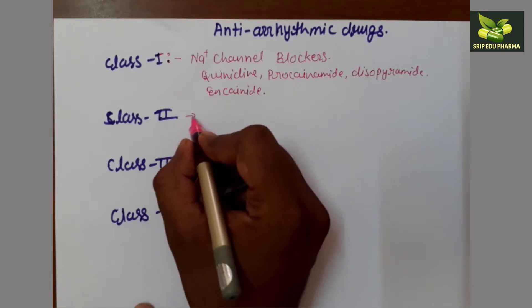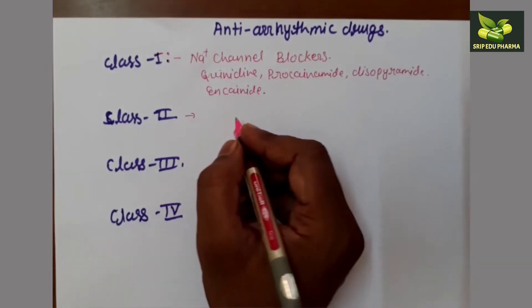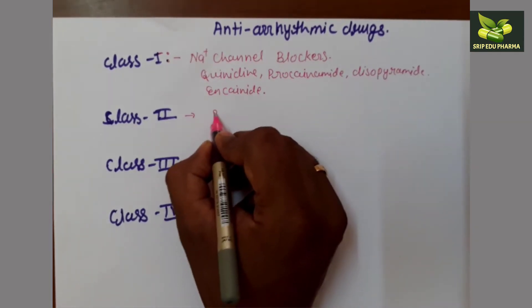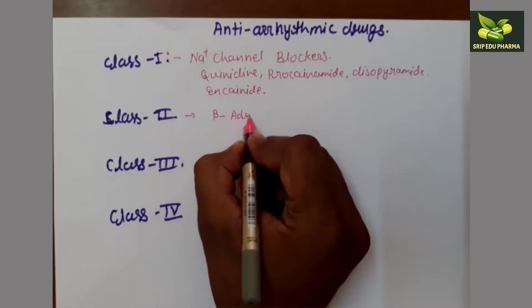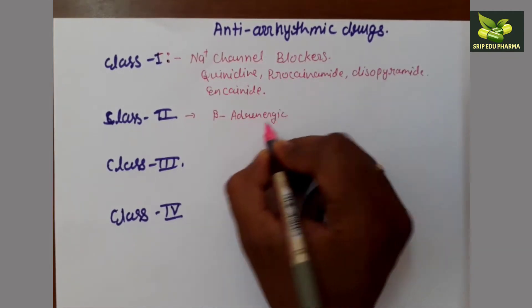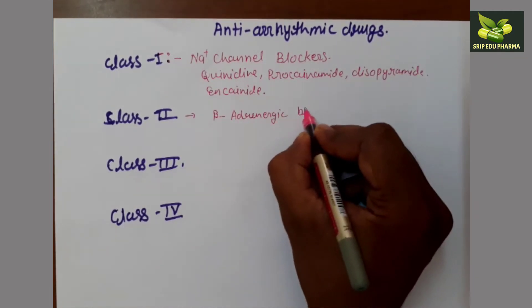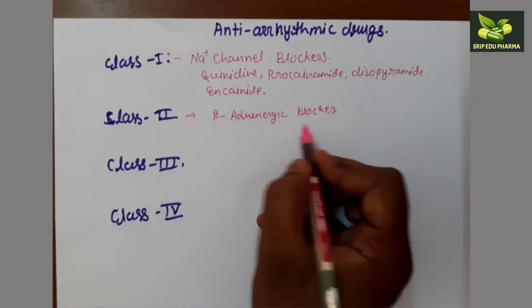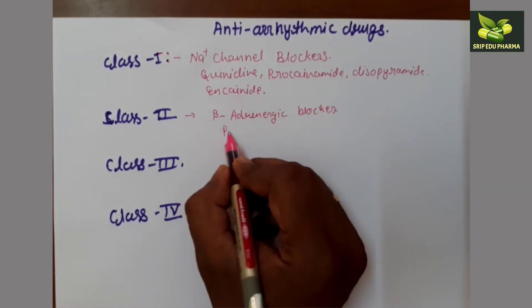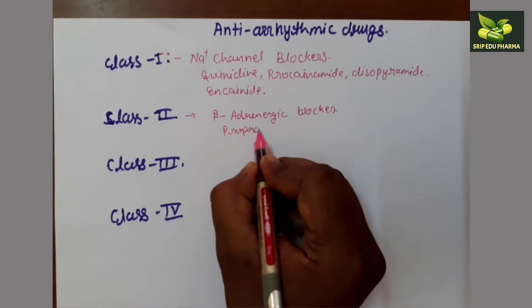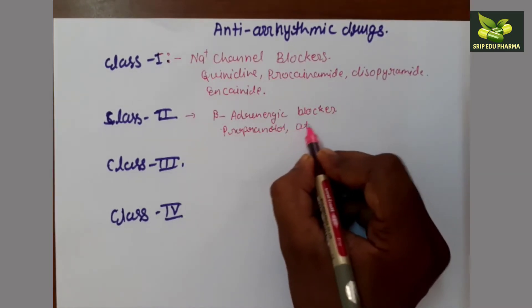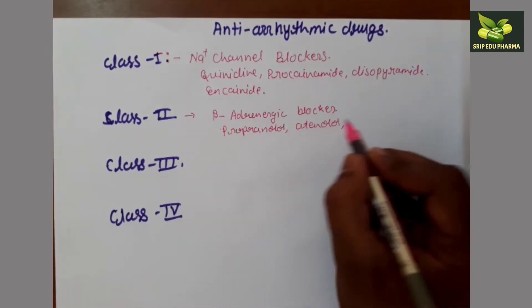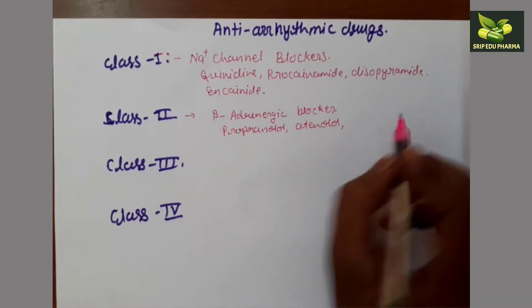Class two drugs are the beta-adrenergic blockers — drugs which block the beta-receptor and thus cause relaxation of the cardiac muscles. Examples include propranolol, atenolol, timolol, and so on.